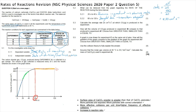Question 5.4 asks how the volume of CO₂ produced in experiment B compares to that in experiment A. We might notice that experiment B uses lumps instead of granules, changing the surface area and affecting the rate. However, the question asks about volume produced. Since the same mass of calcium carbonate and the same number of moles of HCl are always used, the volume of CO₂ produced is always equal. The answer to 5.4 is 'equal to'.